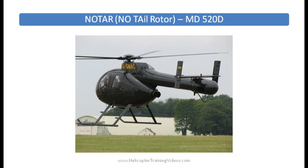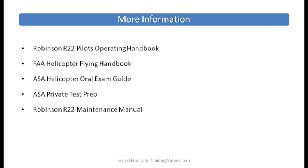For more information, check out the Robinson R22 or R44 POH (Pilot Operating Handbook). The FAA also produces the Helicopter Flying Handbook, which you can download from their website. ASA produces a helicopter oral exam guide and a private test prep, both of which cover systems questions to help you prepare for your private checkride or written test. There's also the Robinson R22 or R44 maintenance manual, downloadable from Robinson. Any thoughts, questions, or feedback are appreciated.